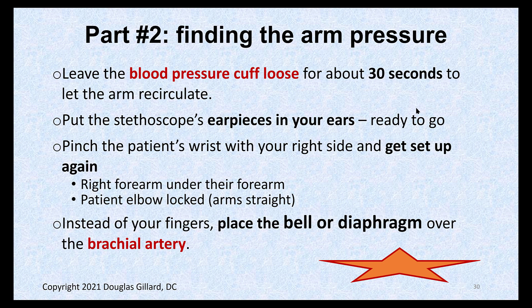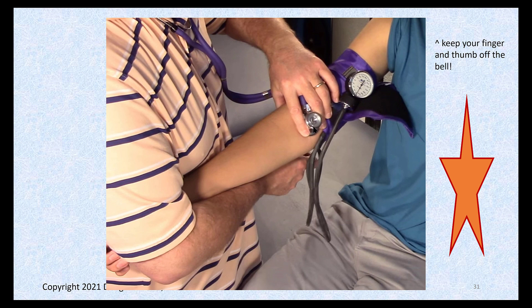For part two — finding the arm pressure — after the 30-second rest with stethoscope in place and diaphragm over the brachial artery, pump up quickly to 30-50 mmHg above the cutoff pressure, then slowly let the air out. The release rate should be about three to four bounces of the needle (or 1001-1002-1003 if there's no bounce) for every 10 mmHg. A steady drop is the goal.